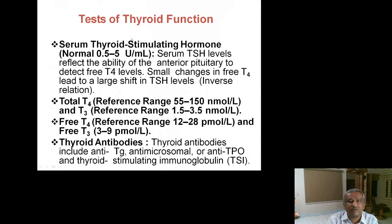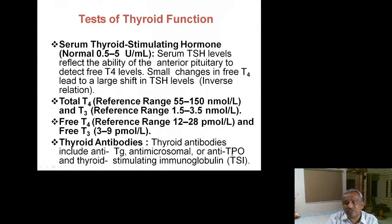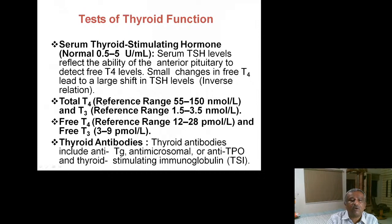The tests we perform are TSH level, total T3, total T4, free T3, and free T4. We also do thyroid antibodies — anti-thyroglobulin, anti-microsomal, anti-thyroid peroxidase (anti-TPO), and thyroid stimulating immunoglobulin (TSI), which is very important in Graves disease. In hyperthyroidism, free T4 will be increased and TSH will be decreased. The two main hormones to measure are free T4 and TSH, both for diagnosis and monitoring treatment.